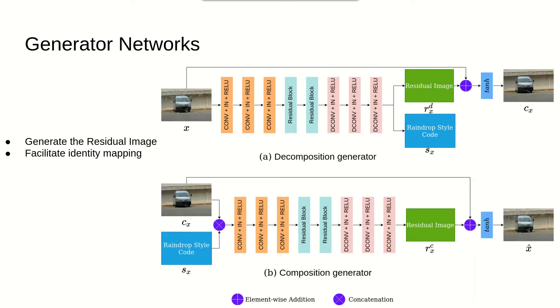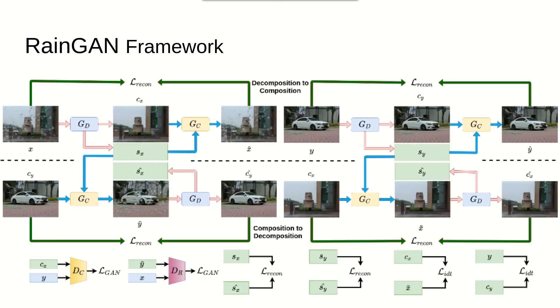The decomposition and composition functions are implemented as two similar generator networks. The decomposition generator decomposes a rain drop image into a clean image and rain drop style code. Inversely, the composition generator composes a clean image into a rain drop image. We observe that rain drops are sparse, mostly covering only some areas while the rest remain clean. To facilitate the identity mapping of the clean area, we introduce the residual module. The generator generates a residual image, which is then added to the input image, followed by the tanh activation.